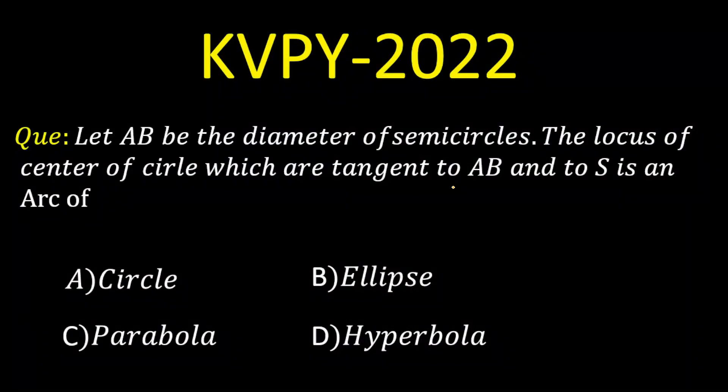Hello everyone, today we will be solving a question of conics from the KVPY paper. The problem is: let AB be the diameter of a semicircle. We have to find the locus of the center of circles which are tangent to the diameter as well as the semicircle. Four options are given: circle, ellipse, parabola, or hyperbola. Let's calculate.